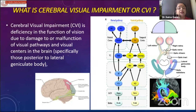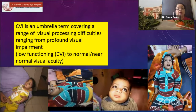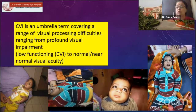So what is it? It's basically a deficiency in the function of vision due to damage or malfunction of the visual pathways and visual centers in the brain — basically those posterior to the lateral geniculate body. So it is a big umbrella which covers a range of visual processing difficulties.